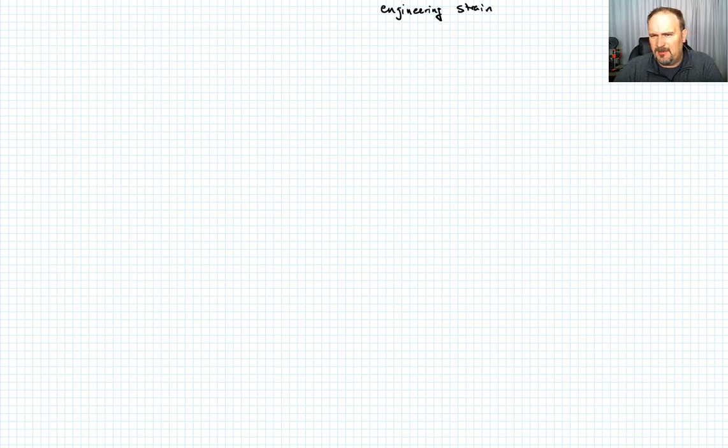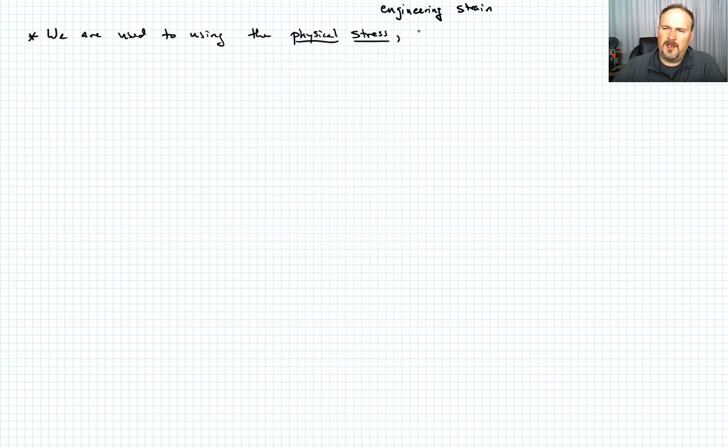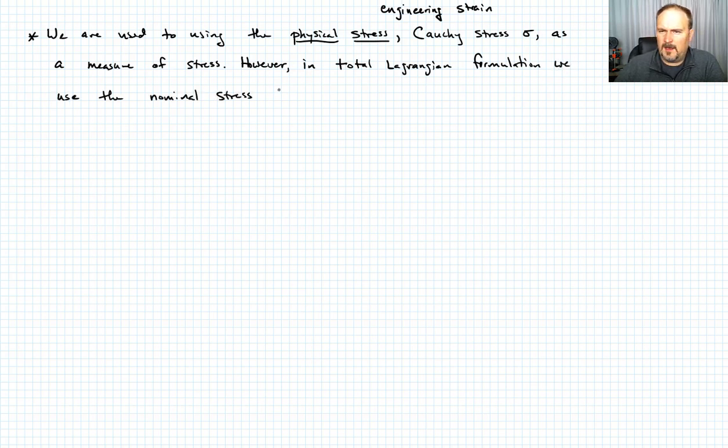So what we've done is we've defined the problem, we've defined a couple relevant parameters, like the deformation gradient, we've now defined our strain measure, how about stress? Let me just now talk about that. So we're typically used to using the physical stress, which is usually called the Cauchy stress, and we usually denote that as σ, as a measure of stress. But in contrast, for the total Lagrangian formulation, we're going to use the, what's called the nominal stress. So I'll just say, however, in a total Lagrangian formulation, we use the nominal stress, P.